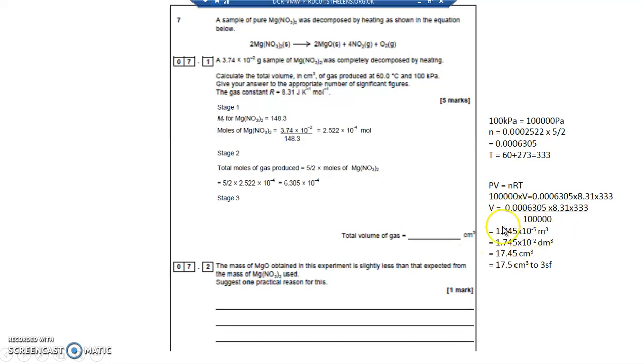So metres cubed into decimetre cubed I multiply by 1000. Decimetre cubed into centimetres cubed I multiply by 1000 again. So every time I go from a large unit value down into a smaller unit value I multiply by 1000. So 1.745 times 10 to the minus 5, multiplied by 1000 gives me decimetre cubed. Multiplied by another 1000 gives me centimetre cubed. 17.45.